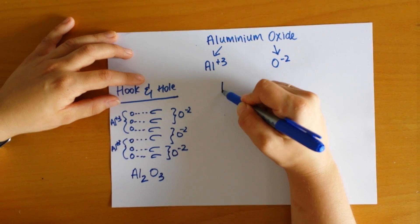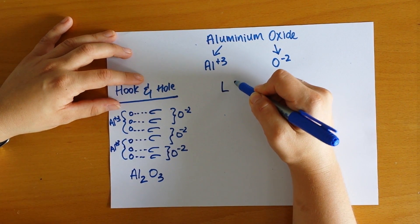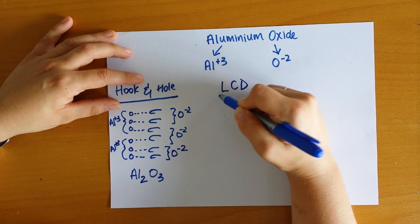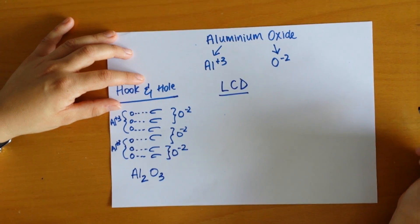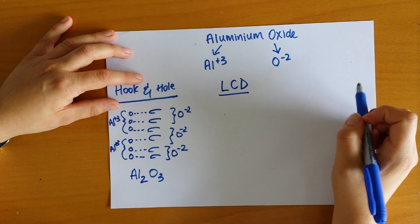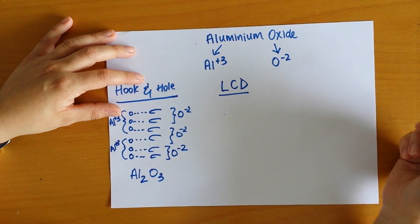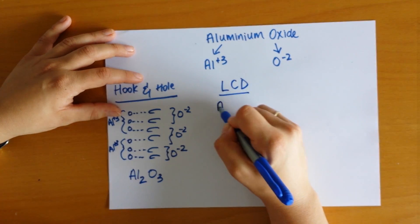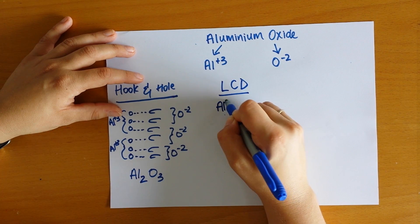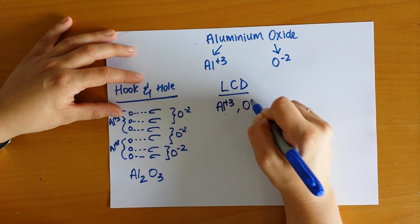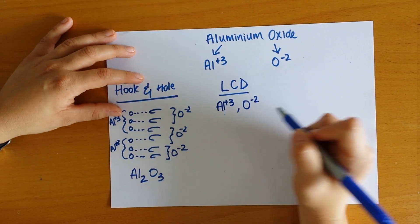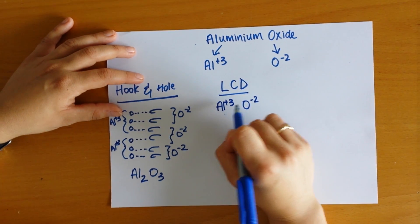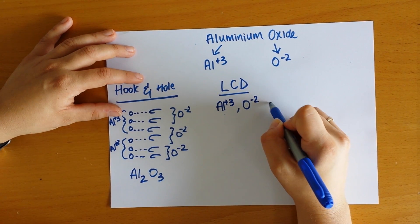Another one that I learned is what I call the lowest common denominator. So it's looking at the lowest common denominator between each of those charges to balance them out and make them zero. So aluminum has a plus three charge, oxide minus two.